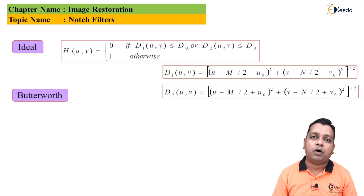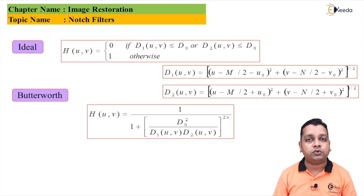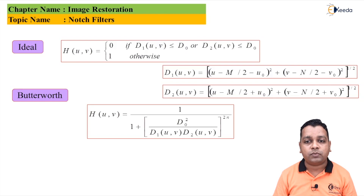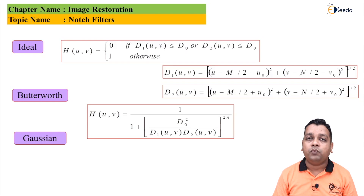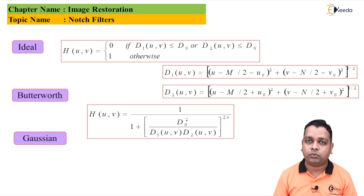The Butterworth type of notch filtering is represented by the filter function H(U,V) = 1 / (1 + [D0² / (D1(U,V) · D2(U,V))]^(2N)), where N represents the order of the Butterworth filter function.